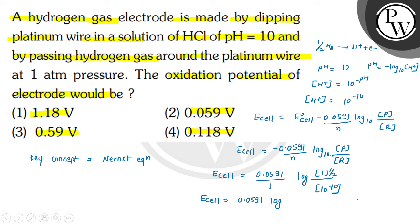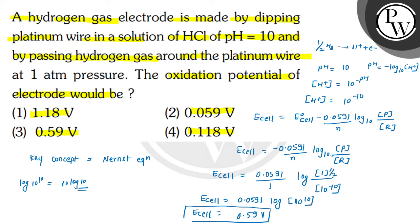We write 10 raised to power minus 10, so it will be positive: log₁₀ of 10 raised to power 10. Now, log₁₀(10¹⁰) equals 10 × log₁₀(10) = 10 × 1 = 10. So E_cell = 0.0591 × 10 = 0.59 volt. This is the value of the oxidation potential of the electrode, which is option 3. Hope you understood it well — all the best and thank you.